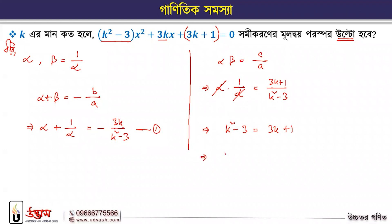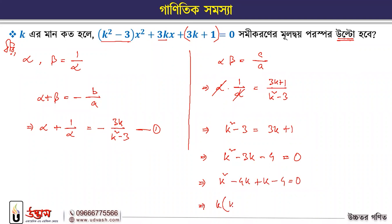k² minus 3 is equal to 3k plus 1. So k² minus 3k minus 4 is equal to 0. Factoring: k² minus 4k plus k minus 4 is equal to 0.